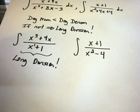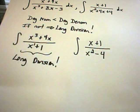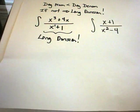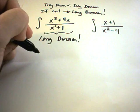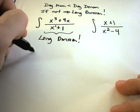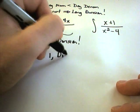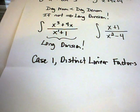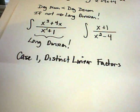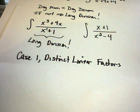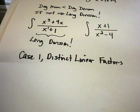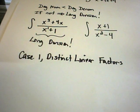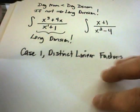Something like x plus 1 over x squared minus 4 is fine — the degree of the numerator is smaller than the denominator and we can proceed with partial fractions. There are four cases. The reason we only have four cases is that any polynomial, no matter what power, can always be factored as a product of linear and quadratic factors. So: Case 1 is distinct linear factors.